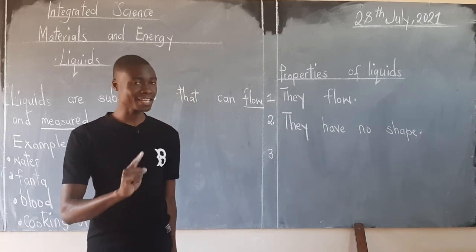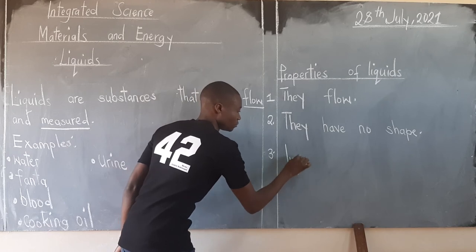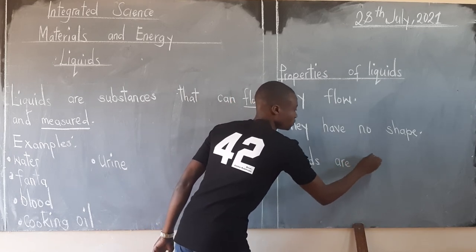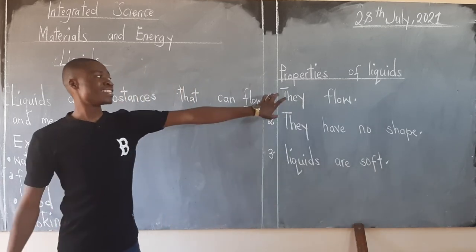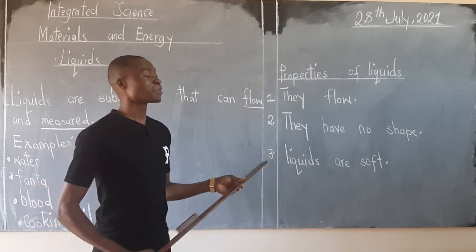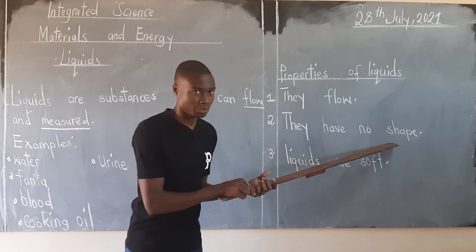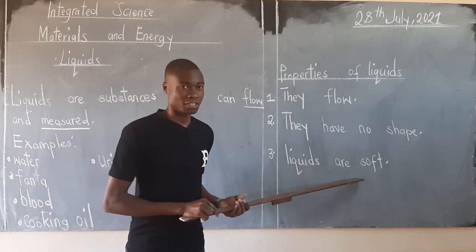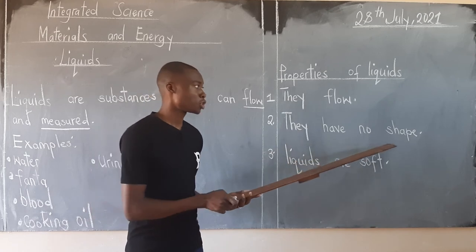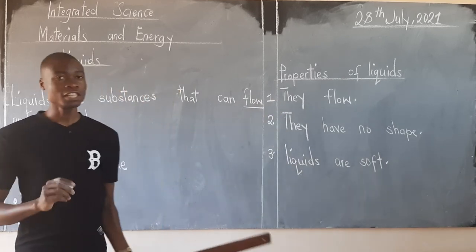Liquids are soft — unlike solids, liquids are soft. So these are the properties of liquids at Grade 2 level. When you're talking about properties of liquids: liquids can flow, liquids have no shape, and liquids are soft. If you're touching water, it's not hard compared to chalk. So liquids are soft, they have no shape, and they can flow. So these are some of the properties of liquids.